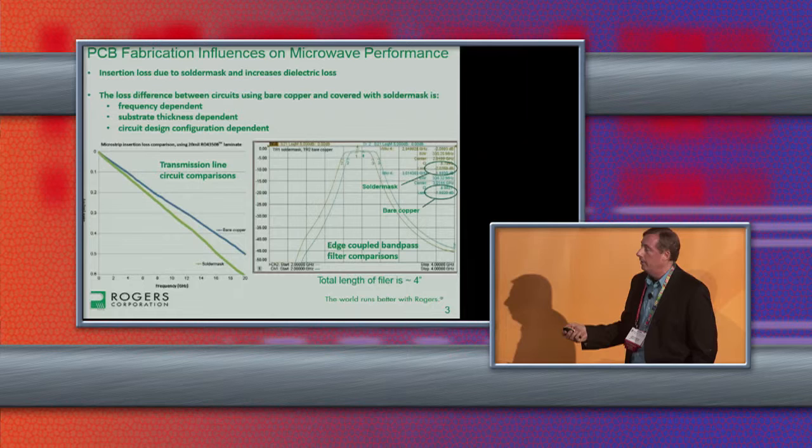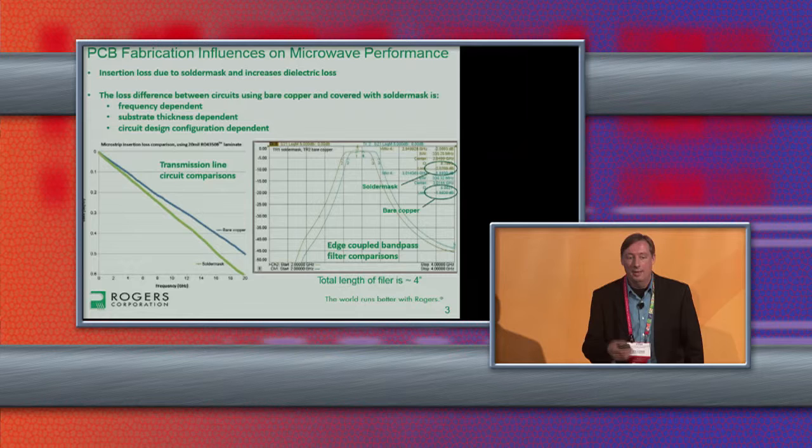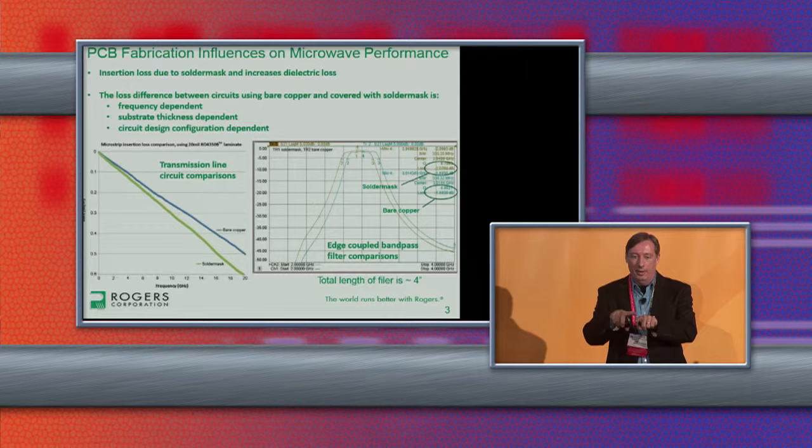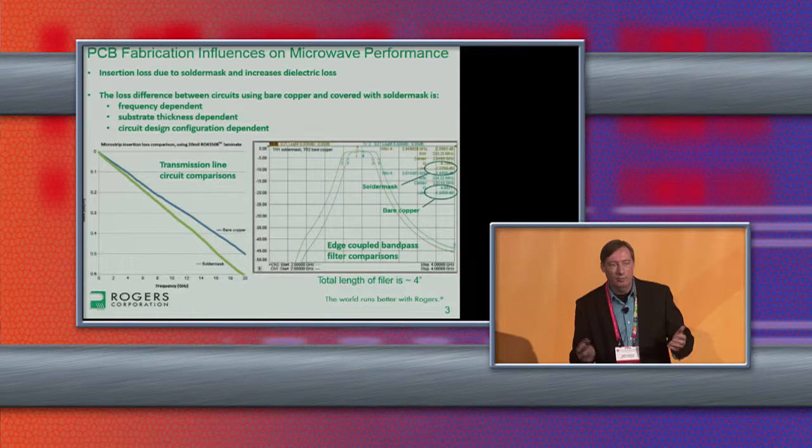So the coupled feature is much more sensitive to solder mask. It makes sense because these conductors are side by side with coupling effects between the fields. When there's no solder mask, these coupling effects are using air — the lowest loss medium. When you cover that up with solder mask, the fields are now using the solder mask, which is not a low-loss medium. So the edge-coupled feature is actually affected more by solder mask than transmission lines or stubs.